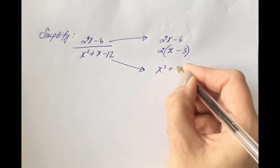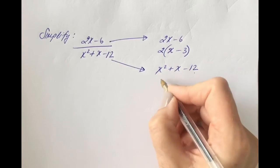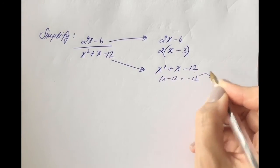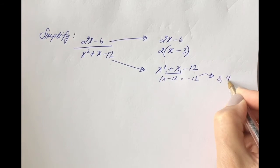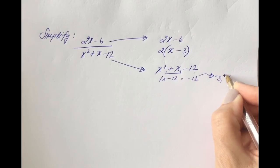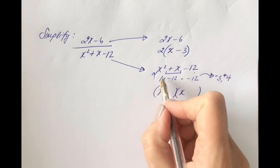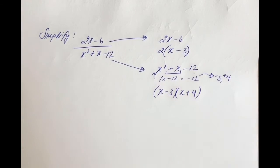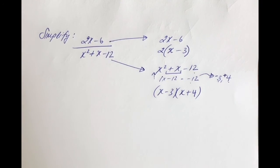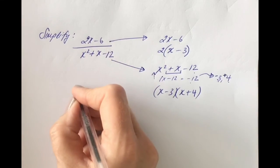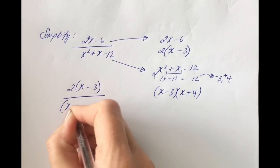First number by last number: 1 × (−12) = −12. I want factors of −12 that add to +1, which are −3 and +4. Since it's a simpler quadratic, jumping to the last step: (x − 3)(x + 4). Minus 3 times plus 4 gives −12, and −3 + 4 gives +1. Now rewriting with the factorized versions: 2(x − 3) on top and (x − 3)(x + 4) on the bottom.